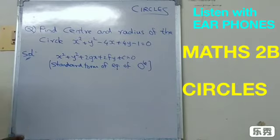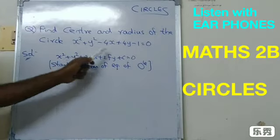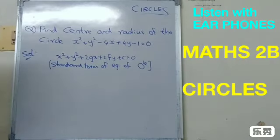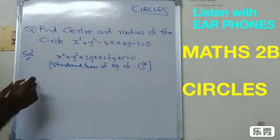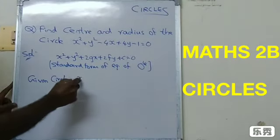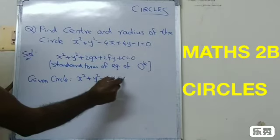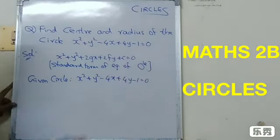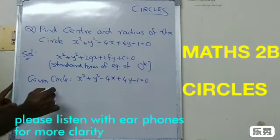How to find center and radius of a circle when given the standard form directly, very easily. First, find the given circle: x² + y² - 4x + 4y - 1 = 0. Now see how we are writing center.